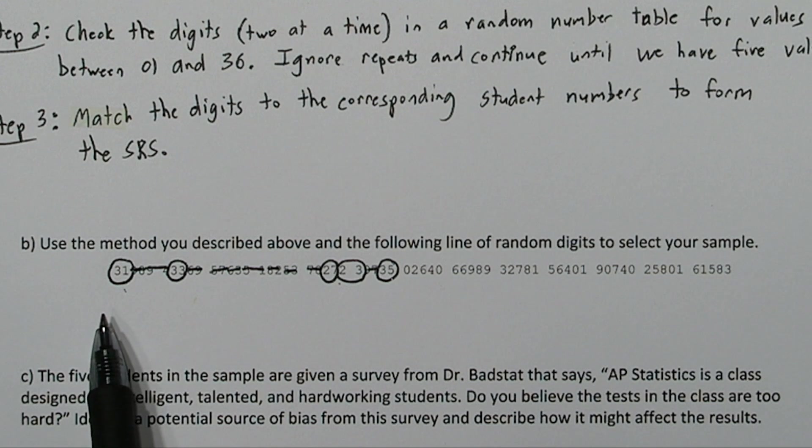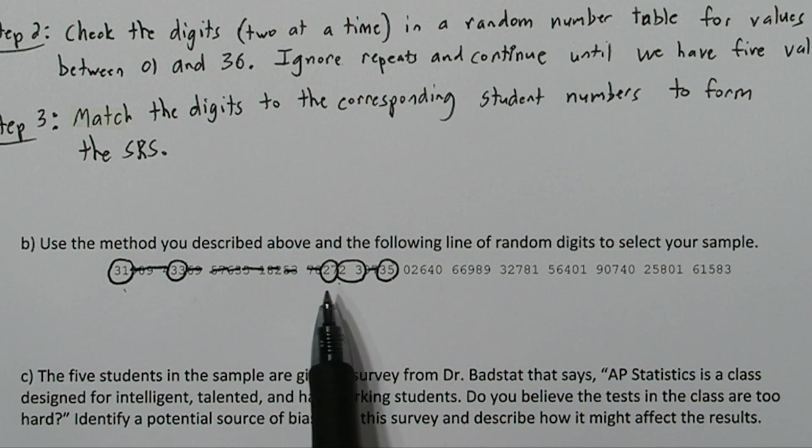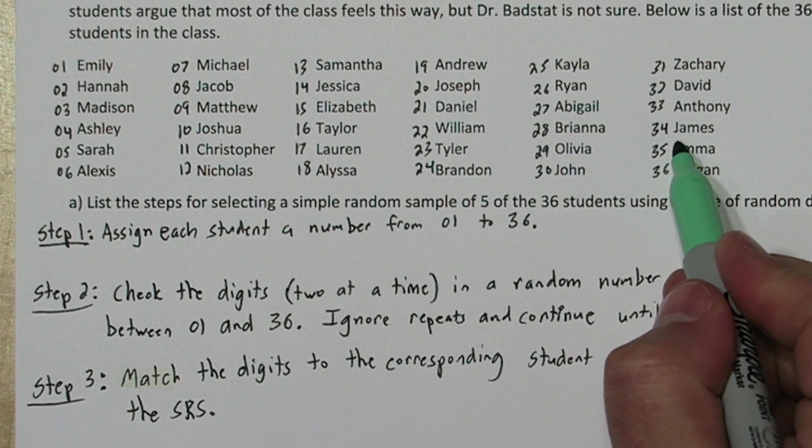So we're going to use the numbers 31, 33, 27, 23, and 35. Let's look at what names those correspond to.